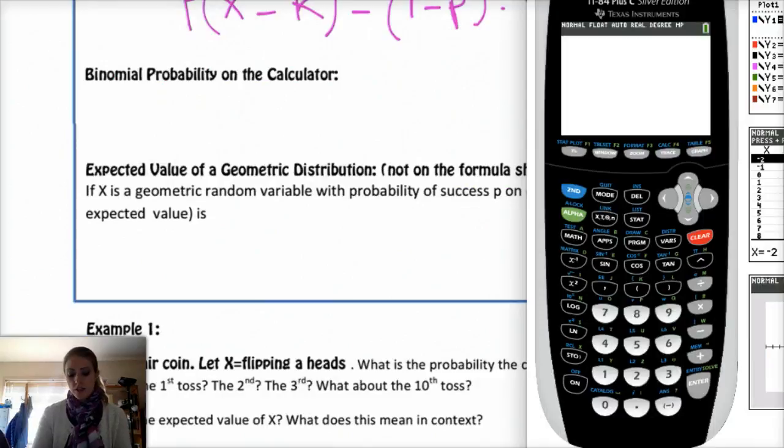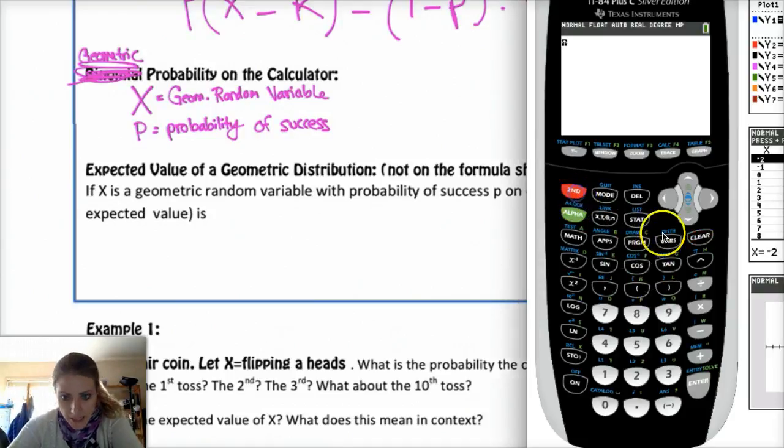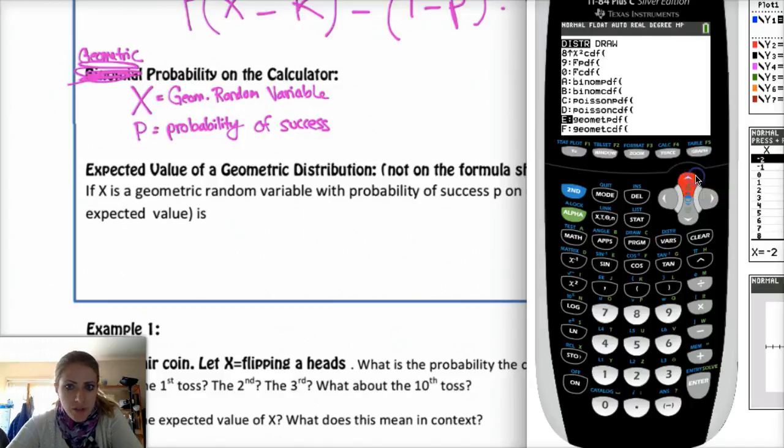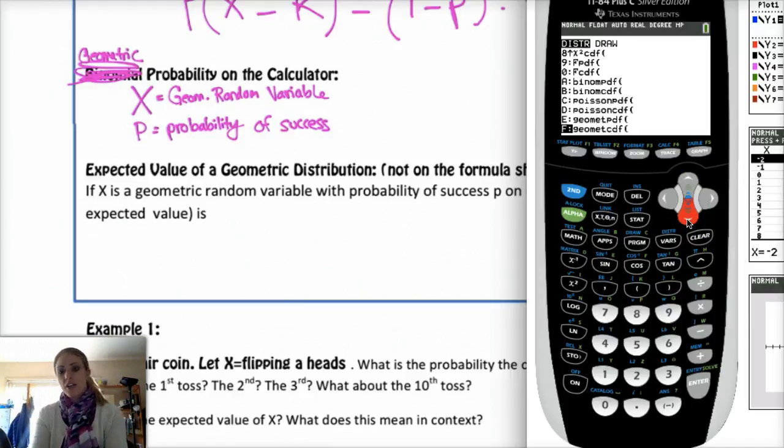On the calculator, super easy. Let's assume that our geometric random variable is X and we have probability of success p. That's totally a typo. That's supposed to be geometric probability. To calculate it, you go to second distribution, second vars. And then you want your geometric distribution. So that's going to be the last two. Geometric PDF versus CDF is the same as the binomial and normal. PDF is the exact value. So the probability of getting a head in coin tosses for the first time on the fifth trial. And then geometric CDF is the probability of getting your success on the fifth trial or anything before that. So getting your success within the first five trials.